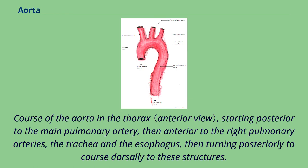Course of the aorta in the thorax: starting posterior to the main pulmonary artery, then anterior to the right pulmonary arteries, the trachea and the esophagus, then turning posteriorly to course dorsally to these structures.